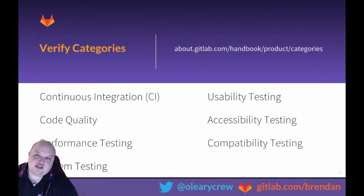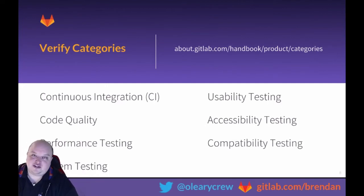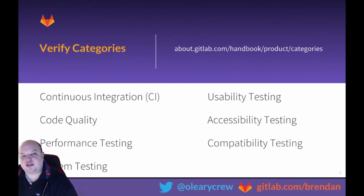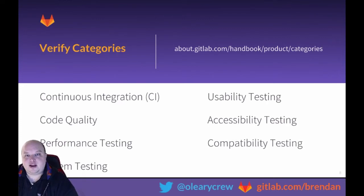Performance testing is really based around the performance of your application and whether the changes you're making are going to make it more or less performant than before. System testing talks about how modern software is really a collection of microservices or larger services that can be deployed to multiple clouds and multiple locations rather than a single monolith on a single server. Validating these complex interactions to ensure the reliability of the system as a whole is just as important as understanding if a given change will break one part of those microservices.